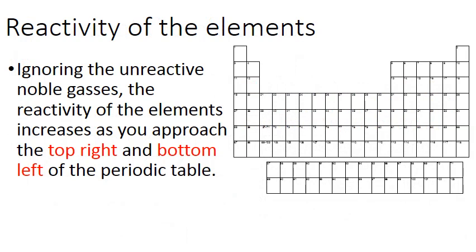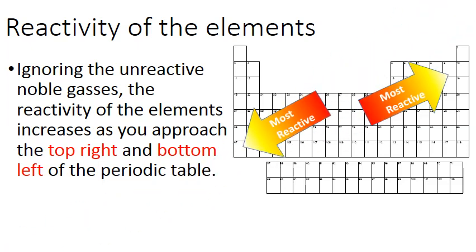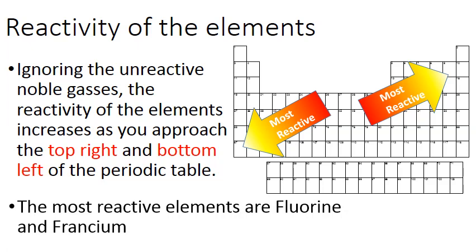You will also see a pattern in the reactivity of the elements, or how easily these elements react with other elements chemically. If we ignore the completely unreactive noble gases at the far right, the reactivity of the elements increases as you approach the top right and the bottom left of the periodic table. So top right, bottom left, these are the more reactive elements as you approach those. So the most reactive elements are fluorine at the top right and francium at the bottom left. So they're both F and they're reactive. Or as I like to say, they're F and reactive. That's a good way to remember which ones are the most reactive.